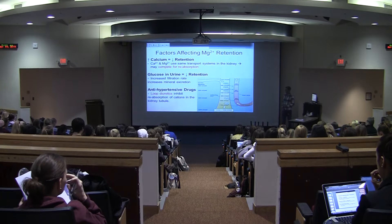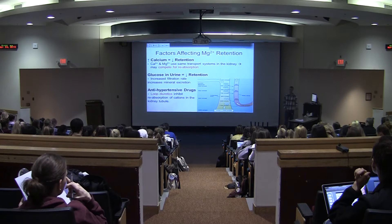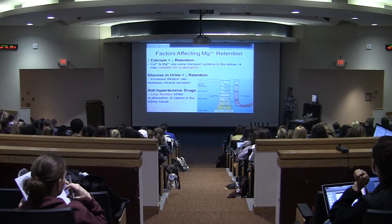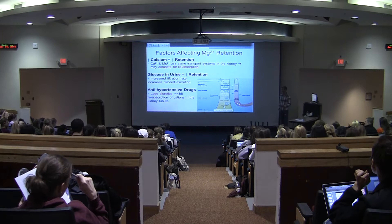This decreases the osmotic gradient between the collecting duct and the kidney, so you're actually able to absorb less water and you excrete more water. This is why in uncontrolled diabetes one of the symptoms is excess urination and excess thirst. When you have this increased filtration rate, you're also going to be increasing the amount of urine produced and increasing the amount of cations excreted, with magnesium being one of them.